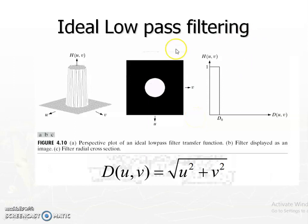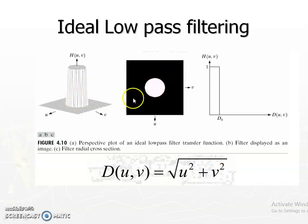This is showing the frequency response of an ideal low-pass filter, with u as frequency along the x direction and v as frequency along the y direction. If the frequency components are inside the ring — meaning the square root of u² plus v² is less than or equal to some d₀ — then keep the frequency component as it is, multiply it with one. If the square root of u² plus v² is greater than or equal to d₀, then multiply it with zero.